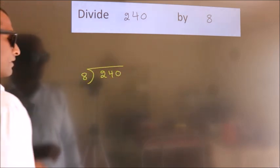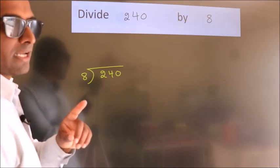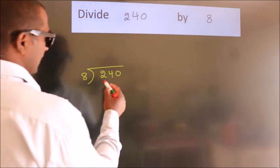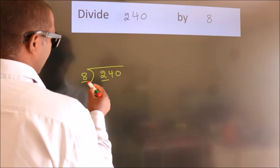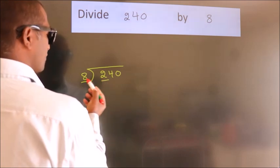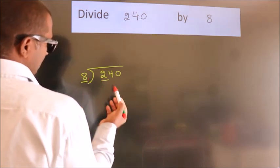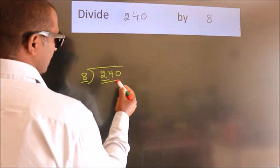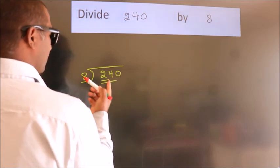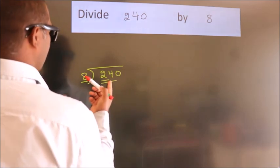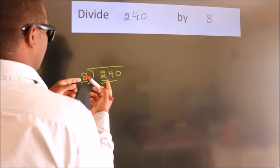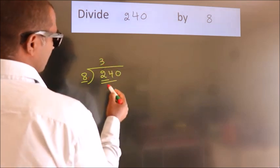This is step 1. Next, here we have 2. Here 8. 2 is smaller than 8, so we should take 2 numbers: 24. When do we get 24? In 8 table. 8 threes, 24.